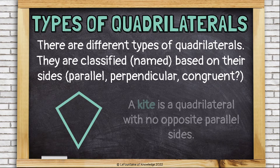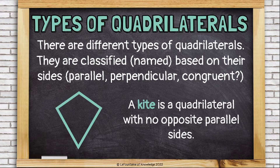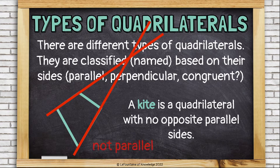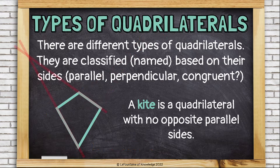This is a kite. A kite is a quadrilateral with no opposite parallel sides. Take a look at these opposite sides — they're not parallel because they will eventually cross. The other pair of opposite sides is also not parallel.